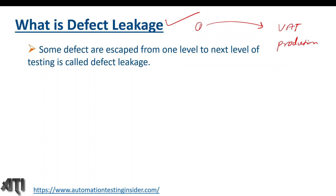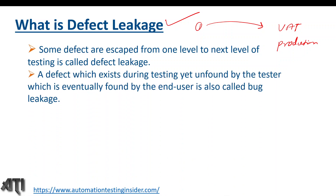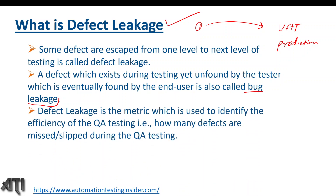In other words, a defect which exists during testing yet is unfound by the tester, and is eventually found by the end user, is also called bug leakage. Defect leakage is a metric used to identify the efficiency of QA testing — that is, how many defects are missed during QA testing.